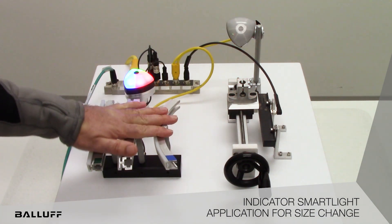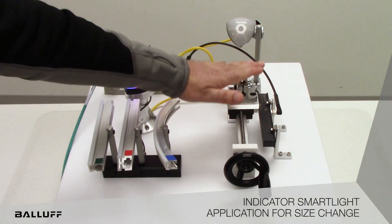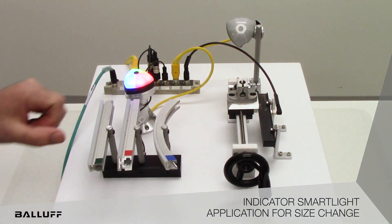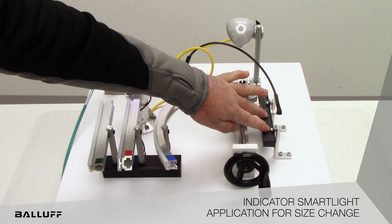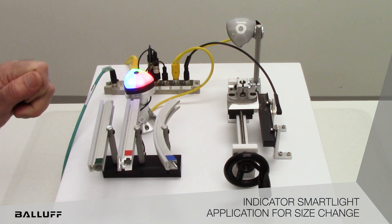In this application we have some interchangeable guide rails, we have an adjustable positioning system on the machine, and of course we have our IO-Link system that's monitoring the position of the machine with a Balluff linear position sensor.